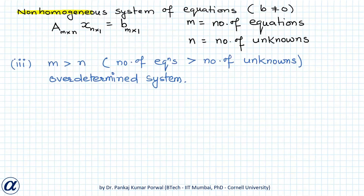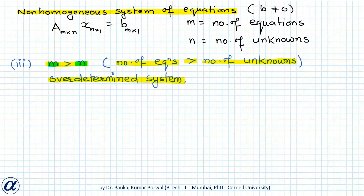The third case for the non-homogeneous system is when m is greater than n, i.e., the number of equations exceeds the number of unknowns. Such a system is called an over-determined system. If all m equations are linearly independent and the number of linearly independent equations is greater than the number of unknowns, then the system will be inconsistent.